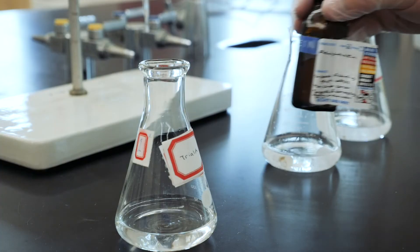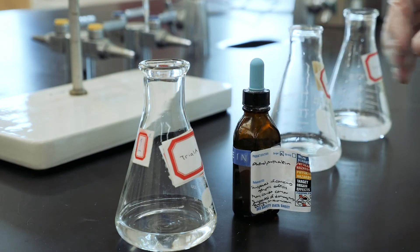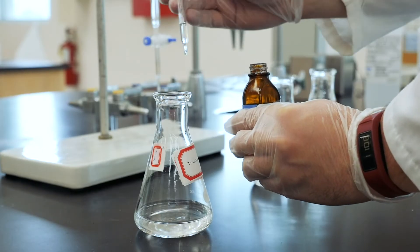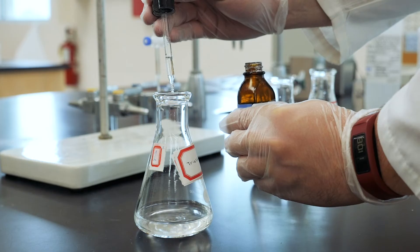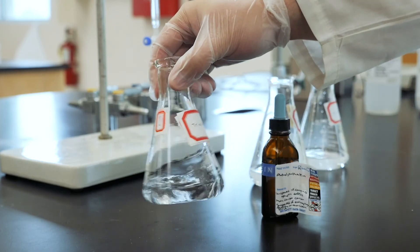Once the KHP is completely dissolved, add three drops of phenolphthalein indicator solution. It's the phenolphthalein that will change color for us so that we can see when the reaction has completed.